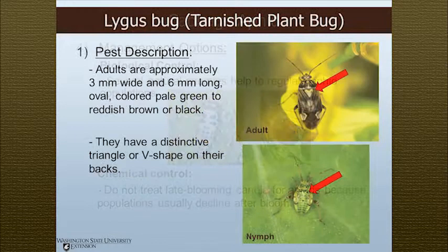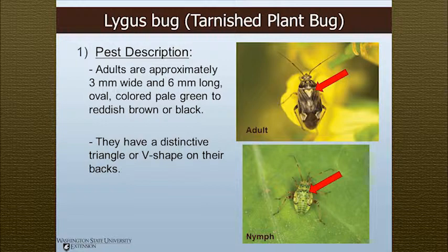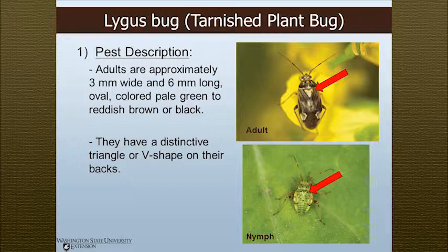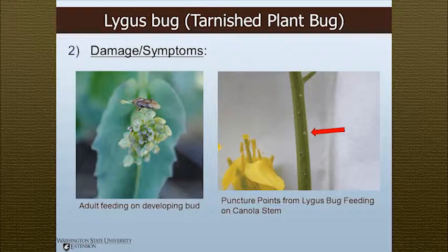Lygus bug, also known as tarnished plant bug. Pest description: these guys are approximately three millimeters wide and six millimeters long, with colors ranging from yellows to tans to browns. They have a distinctive V shape on their back — a telltale sign you're dealing with lygus bug when looking at adults. Nymphs are sometimes confused with aphids; the easiest way to tell them apart is to look for black dots on the abdomen and thorax. Adult lygus bugs like to feed on developing buds and will also feed on the stem — if you see little puncture marks, like tiny hypodermic needle marks, that's probably a good indication you have lygus bugs in the field.